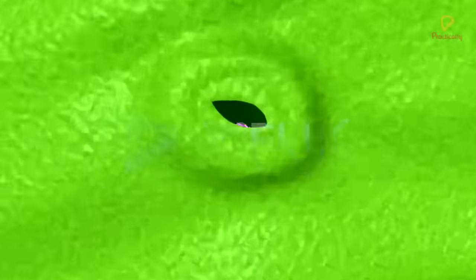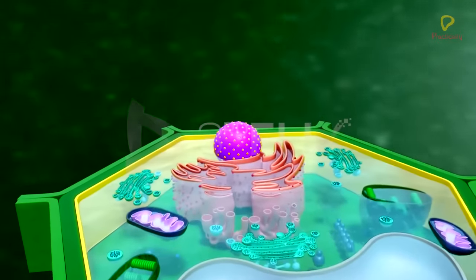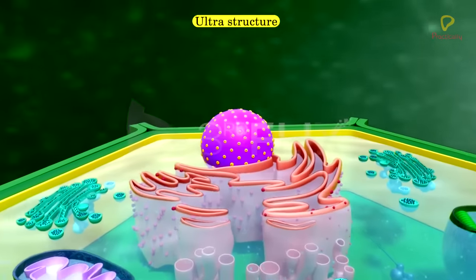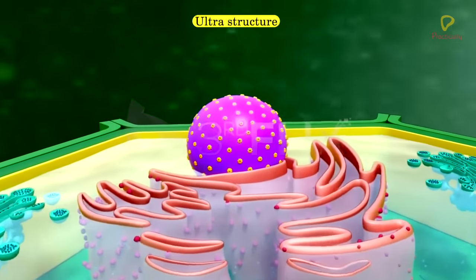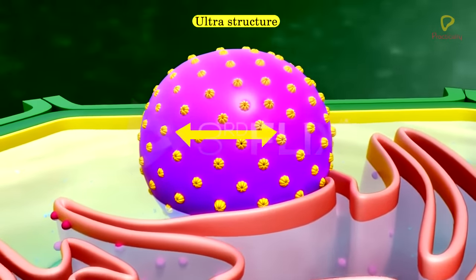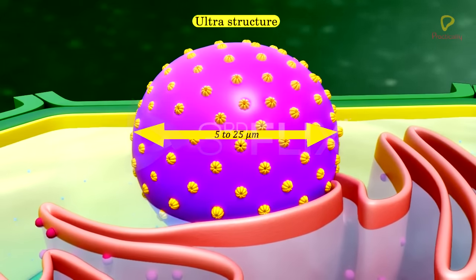Objective: To study about the nucleus. Ultra structure of nucleus. A typical interphase nucleus is 5 to 25 micrometers in diameter.